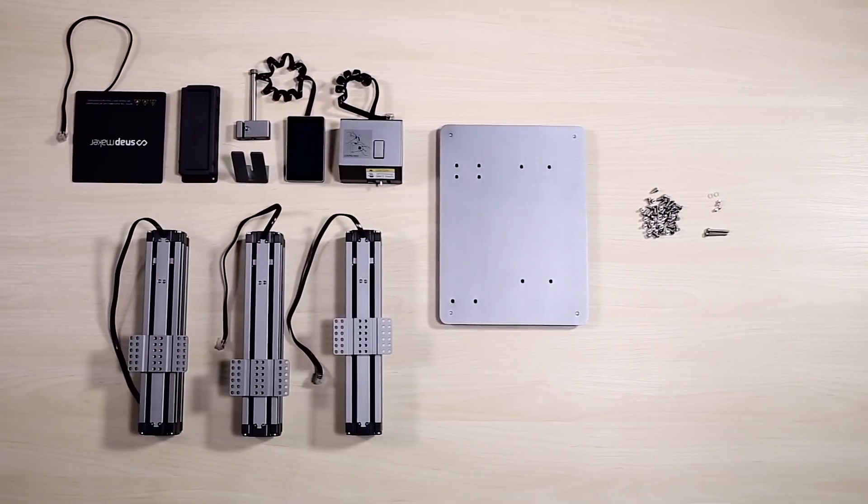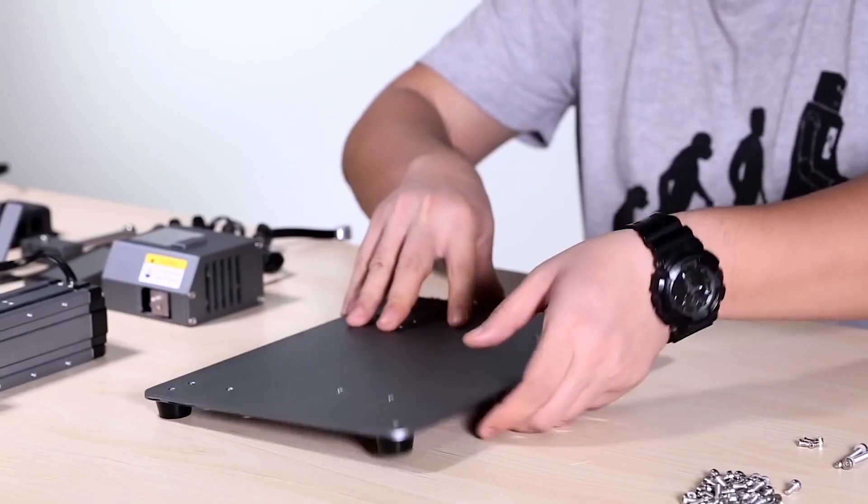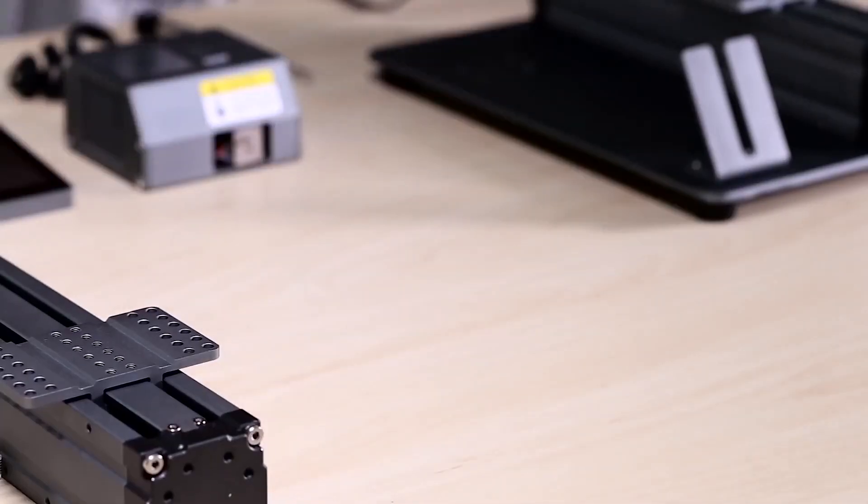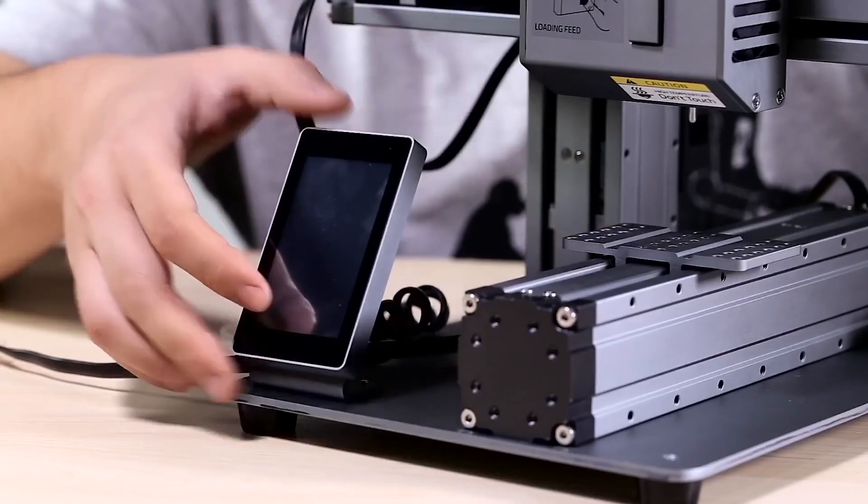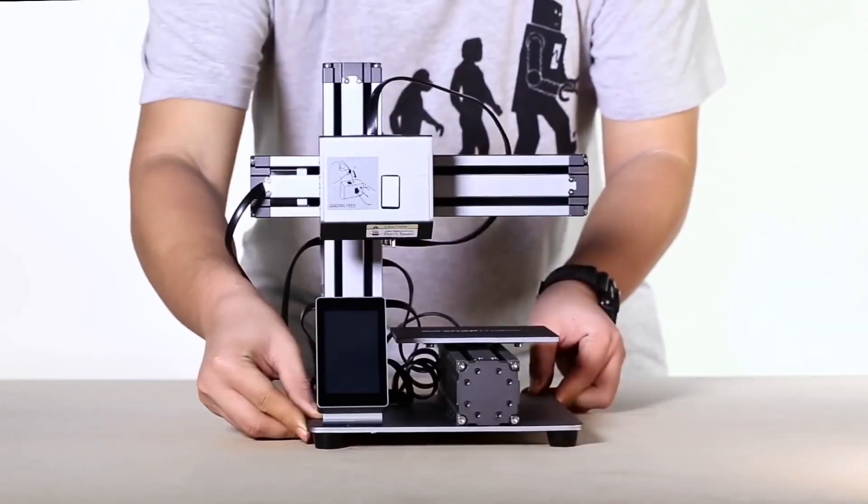Snapmaker also features an innovative modular design, giving you an easy setup of 10 parts in only 10 minutes, which is the best ever on a 3D printer.